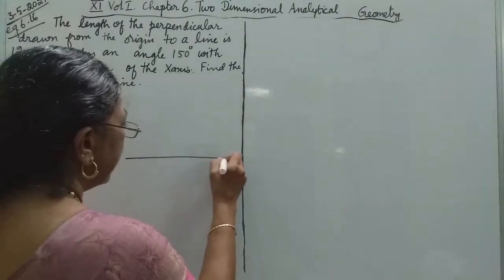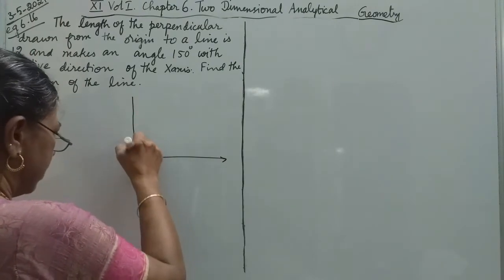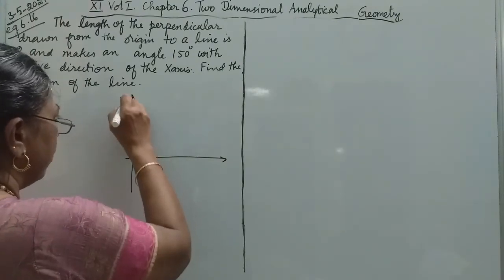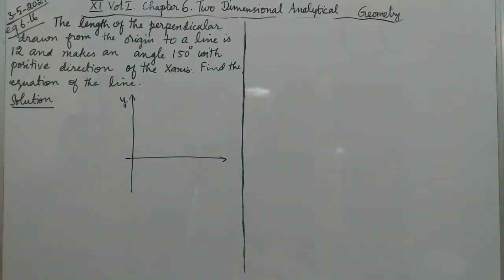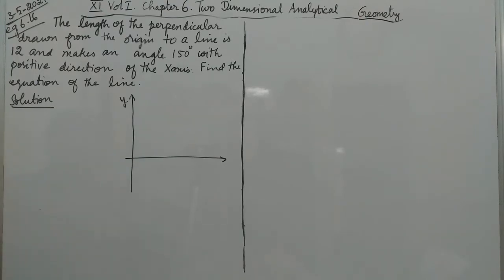For the diagram, we have the x-axis and the y-axis. The line is making 150 degrees with the positive direction of the x-axis. The length of the perpendicular drawn from the origin to the line is 12, and it makes an angle of 150 degrees with the positive direction of the x-axis.